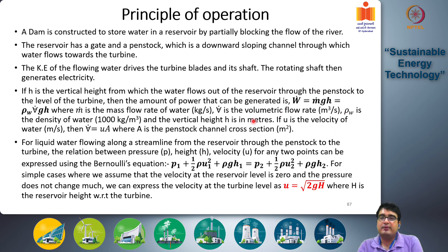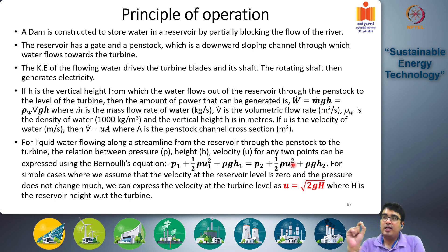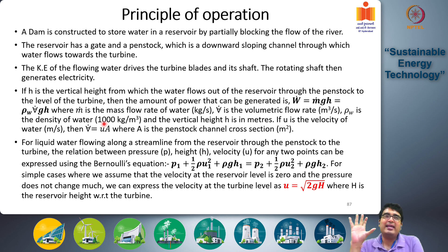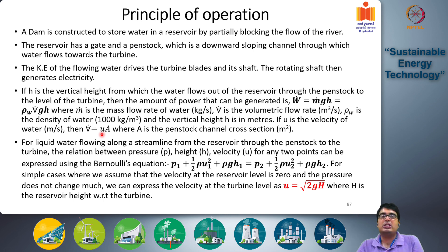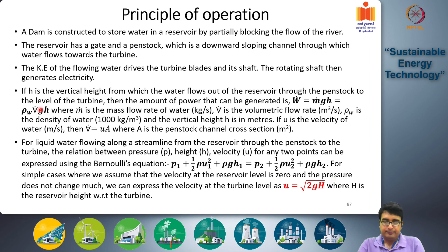In summary: density of water is 1000 kg/m³, v-dot is the volumetric flow rate in m³/s, and h is the vertical height. If u is the velocity of water flowing into the turbine, then the volume flow rate v-dot equals velocity times cross-sectional area of the channel — velocity in m/s times area in m² gives m³/s.